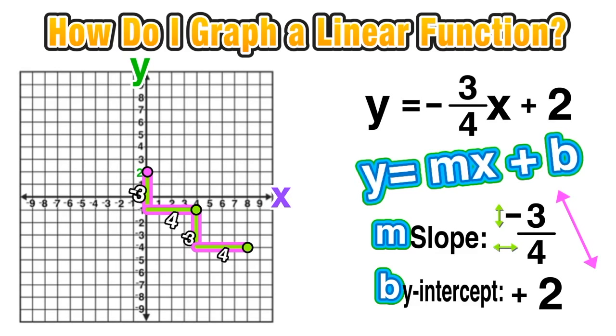If we want to plot some points on the left side of that y-intercept at 2, we just repeat this process in reverse: going left 4 units and then up 3, plotting another point. We should see that our points are all aligned, which means we can construct a line that passes through all the points. Now we have successfully graphed our linear function y = -3/4x + 2.